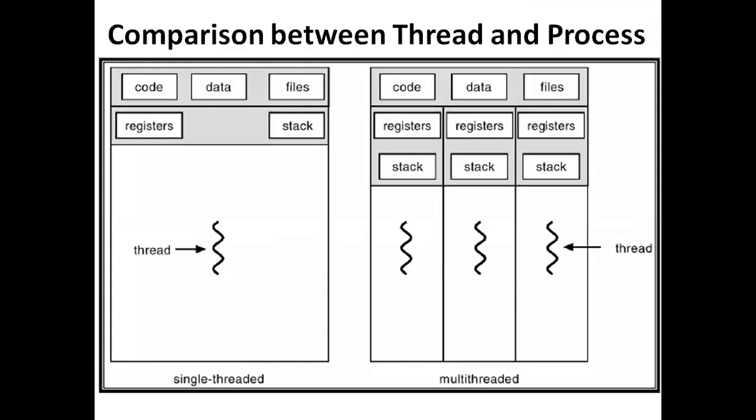In this diagram, we will see the comparison between a thread and a process. In one diagram, we have a single-threaded process — one thread is available — and here we have our code, data, files, registers, and stacks. In the other diagram, we have three threads, and each thread has its own registers and stack.